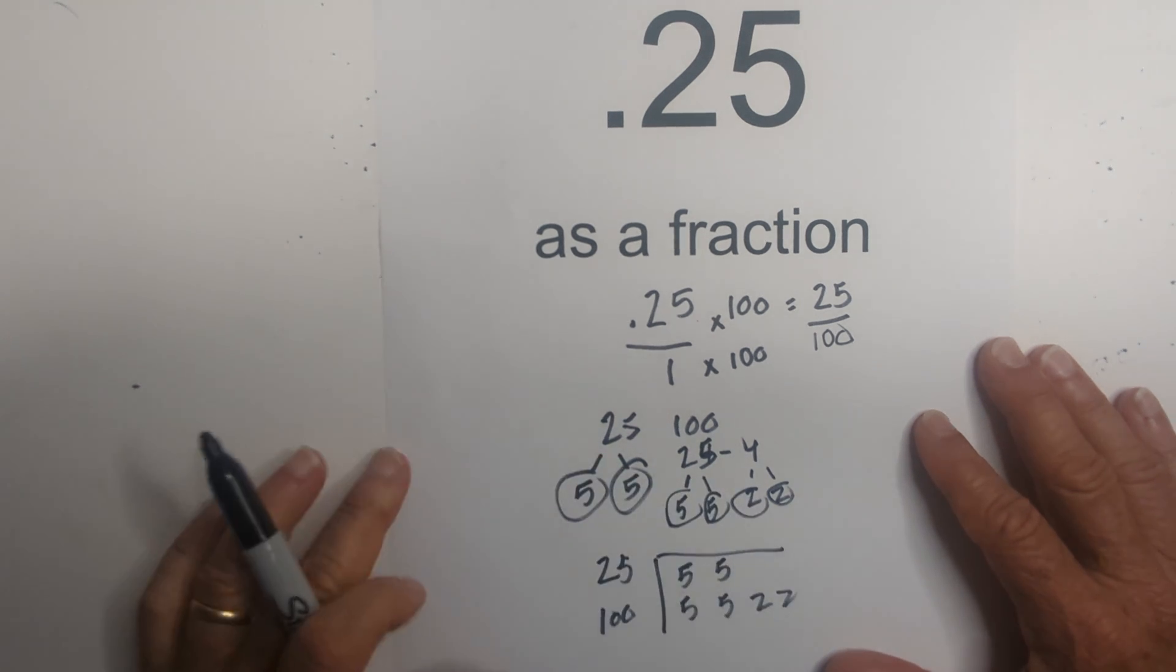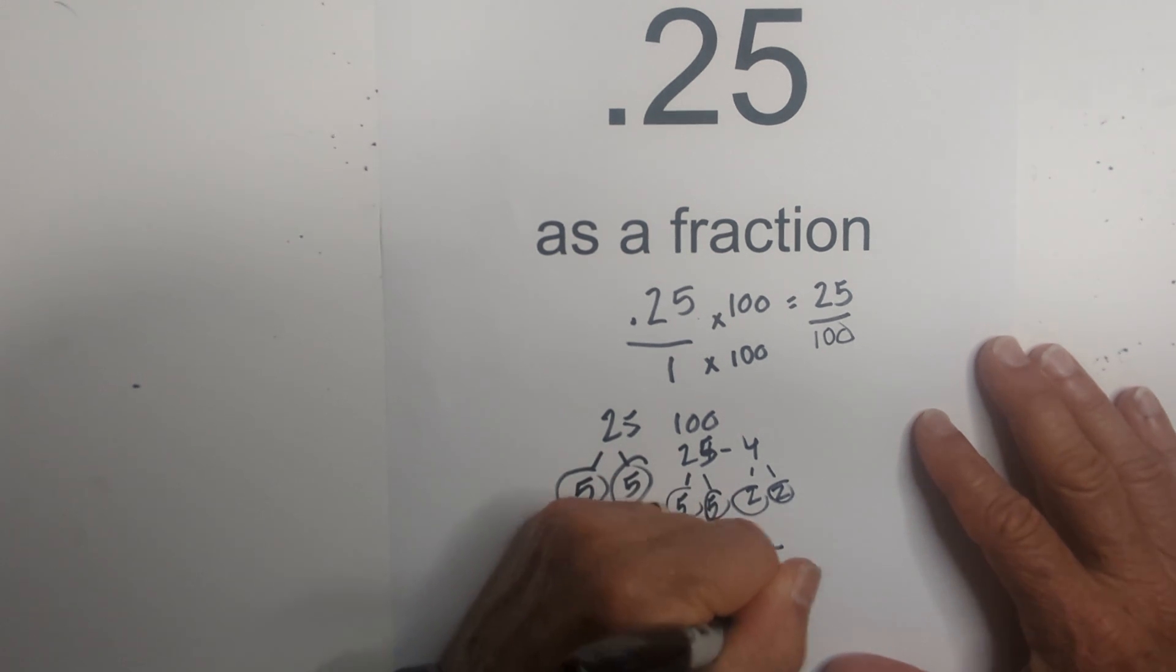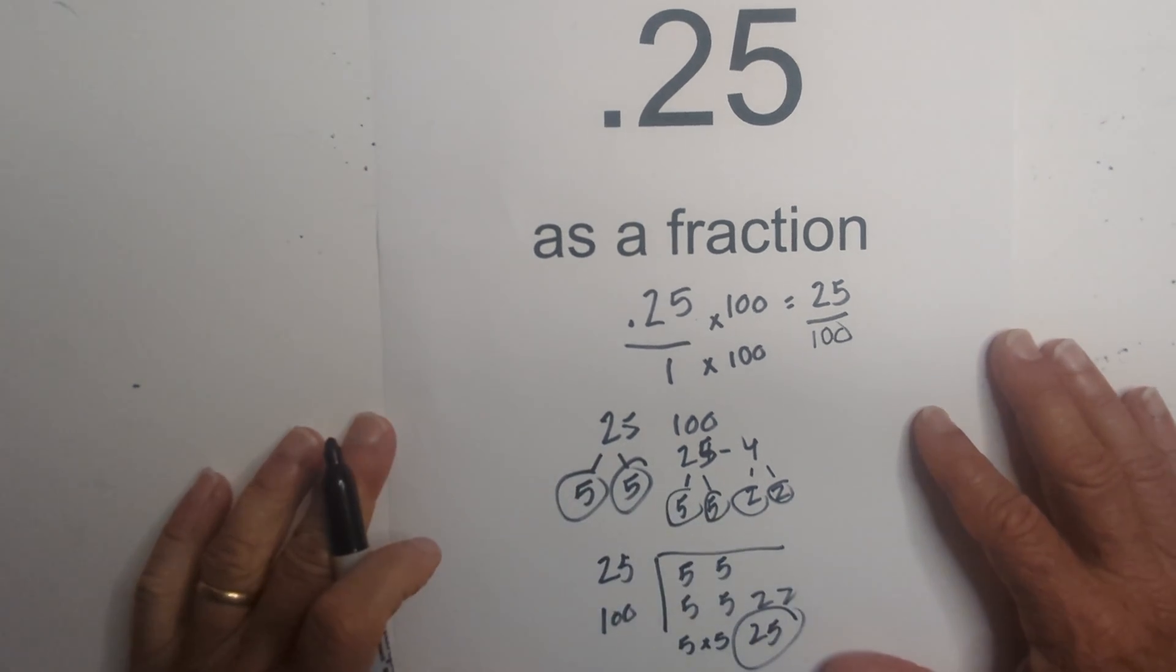And I look for two numbers in a vertical column. We have a 5 and a 5, and multiply these together, and that's 25. So that's how you can find the greatest common factor.